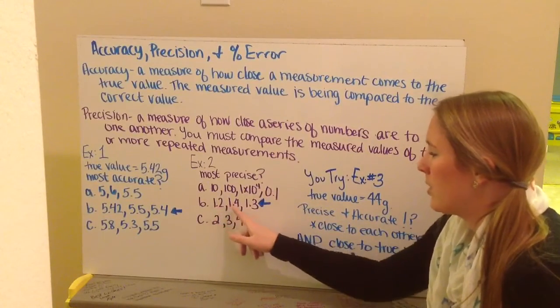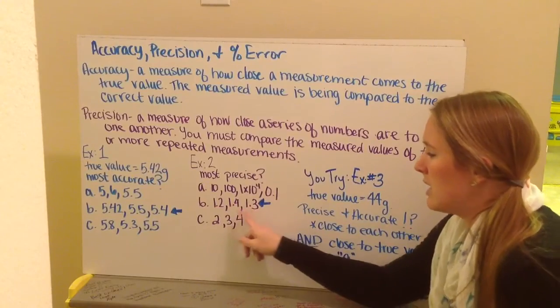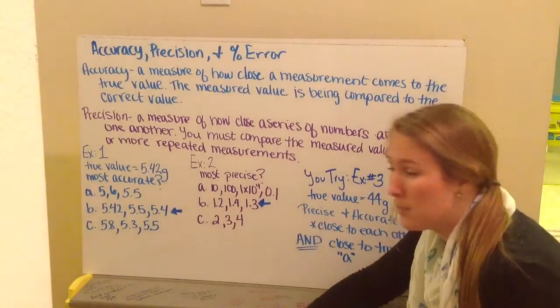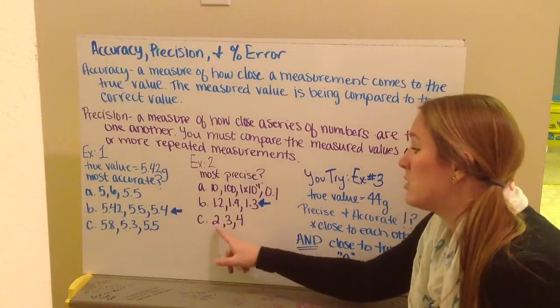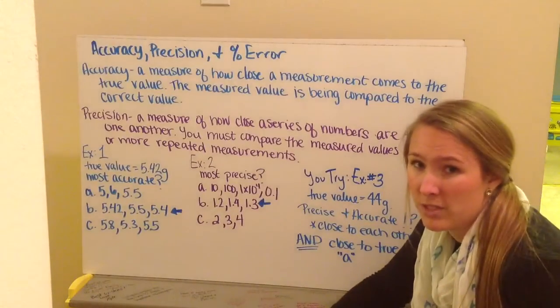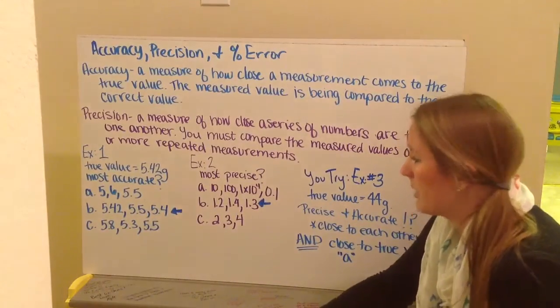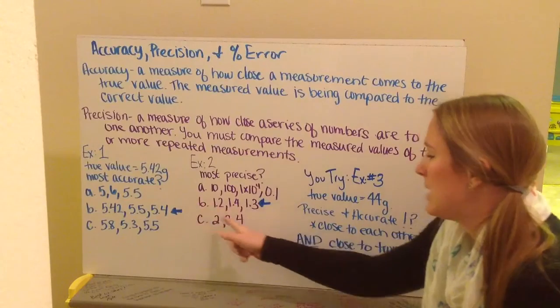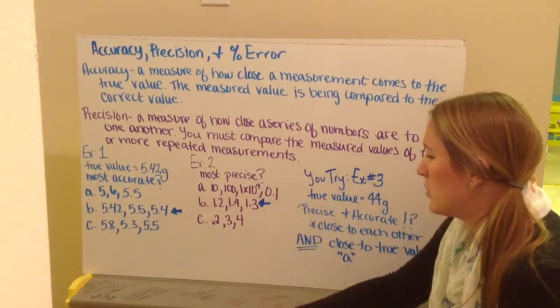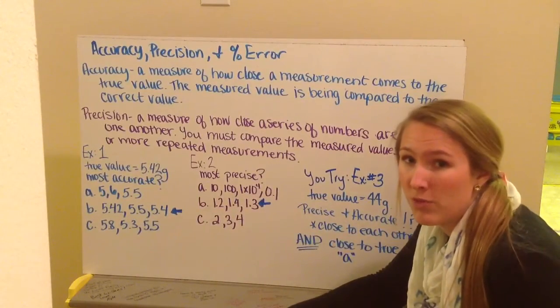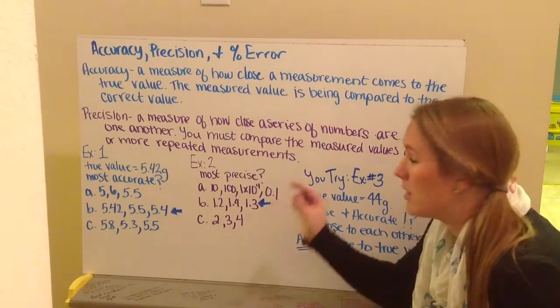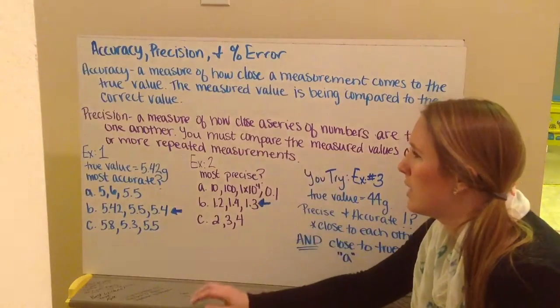1.2, 1.4, 1.3. These have a difference of a tenths place between each of them. And 2, 3, and 4 all have a difference of a ones place between them. Therefore, choice B again is going to be the most precise group of measurements because they are the closest to one another.